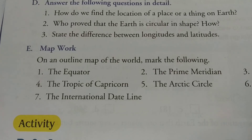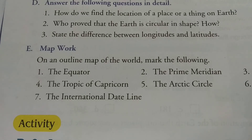Second point of longitude: 'Longitudes are drawn in the north-south direction.' Full stop. And the latitude column second point: 'Latitudes are drawn in the east-west direction.' Full stop. Third point of longitude: 'They are of the same length.' Full stop. In the latitude column, third point: 'They get shorter and shorter as they move towards the poles.'